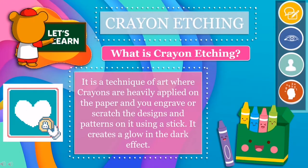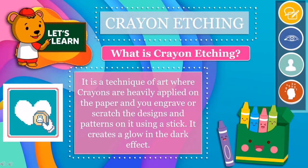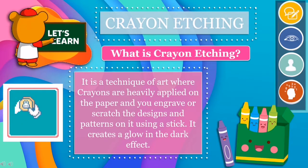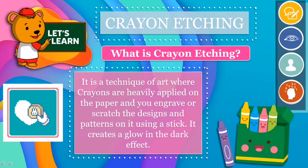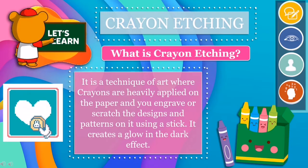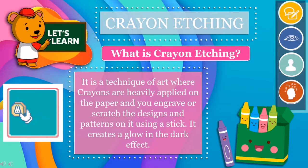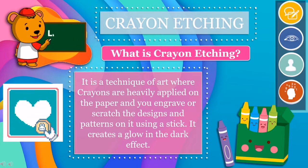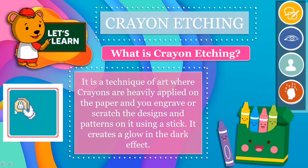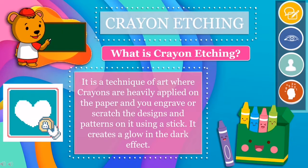Let us apply the principle of rhythm and balance in the crayon etching technique. But what is crayon etching? It is a technique of art where crayons are heavily applied on the paper, and you engrave or scratch the designs and patterns on it using a stick. It creates a glow-in-the-dark effect.